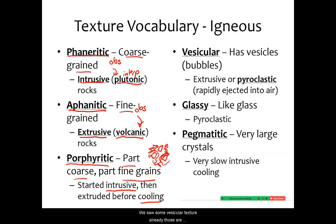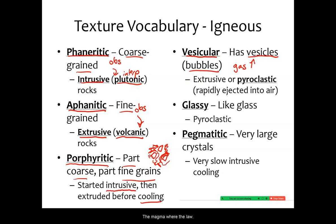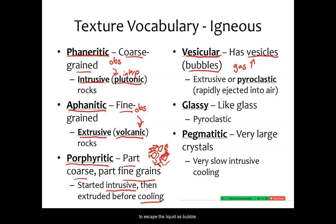We saw some vesicular texture already. Those are rocks that have vesicles or bubbles representing the gas as it escaped the magma or lava. Oftentimes these vesicular rocks form at Earth's surface because the pressure is low enough for gases to escape the liquid as bubbles, so they're often associated with other extrusive rocks.